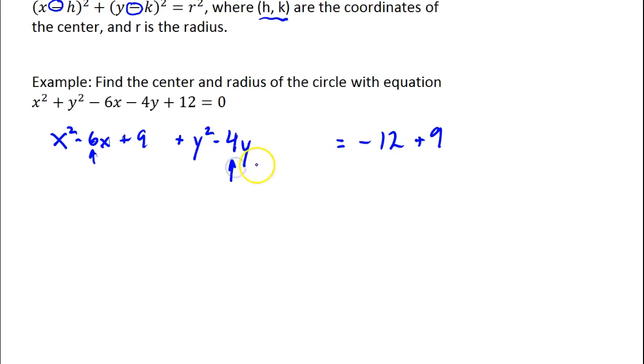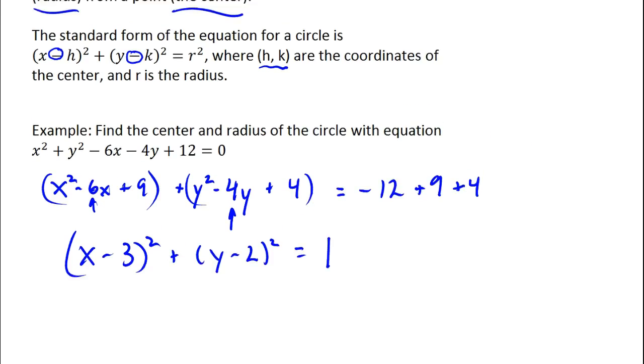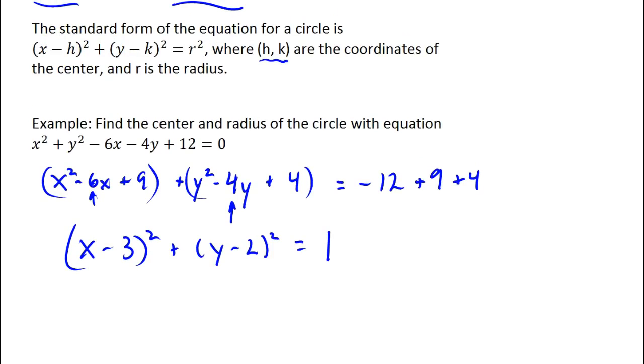Complete the square for y. I'm going to take half the middle term, in this case 2, square it, add it to both sides. Now, these three terms will factor into x minus 3 squared, and these three terms will factor into y minus 2 squared, and negative 12 plus 9 is negative 3, plus 4 is 1. Well, hopefully now you see how this looks like our equation up here, right? I have x minus 3, so that means there's h, and then y minus k, there's k, and there's r squared. So our center is going to be at positive 3, 2, and our radius is the square root of 1, which is 1.